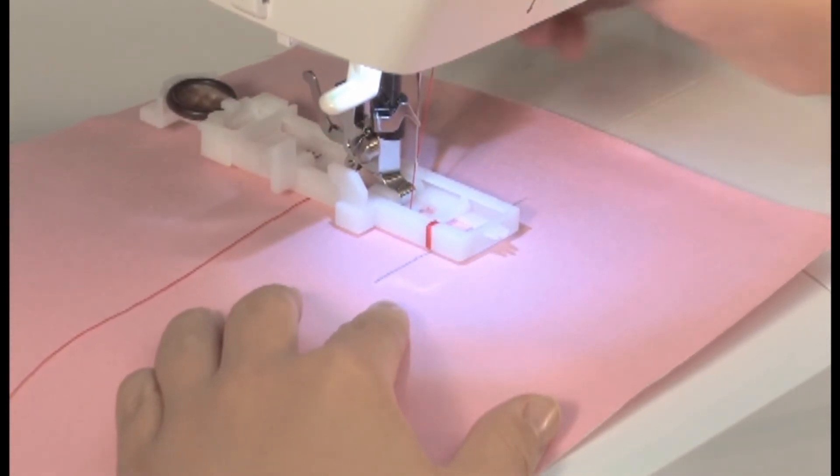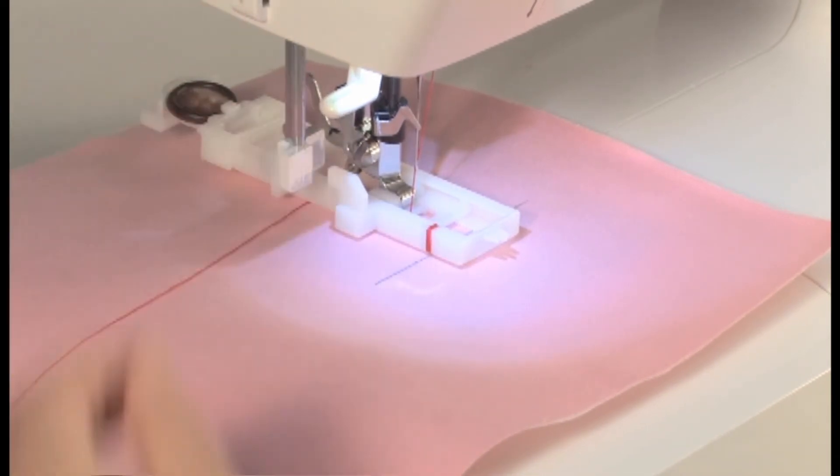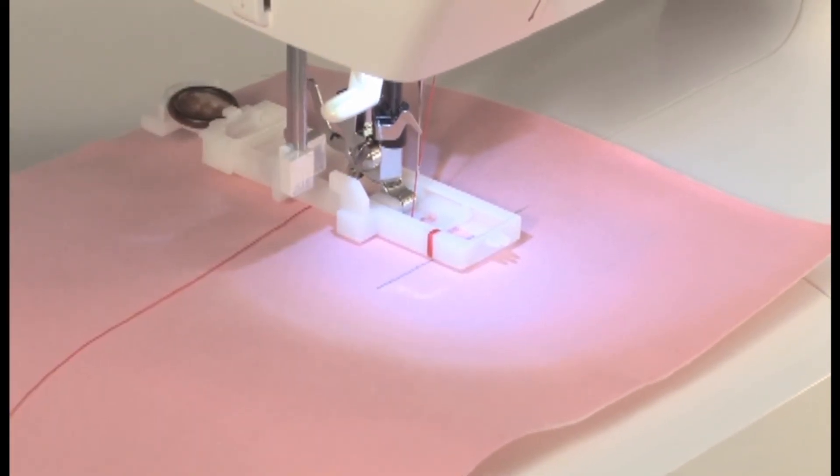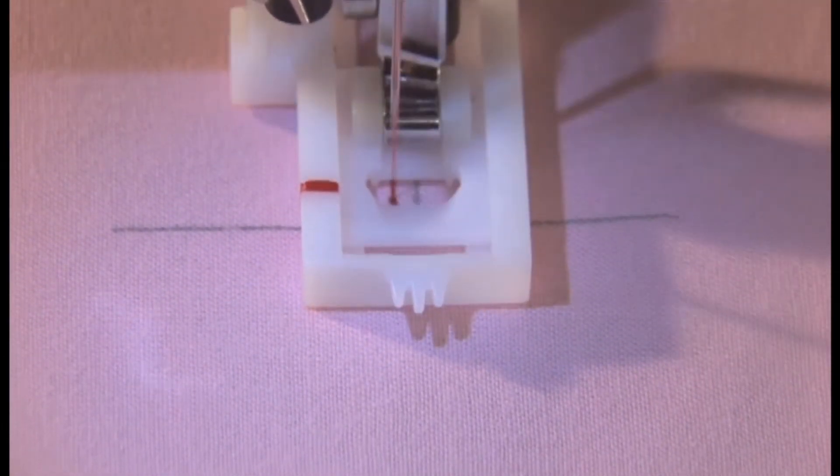Lower the presser foot. Lower the buttonhole lever until it stops. Press the foot controller to start the machine.